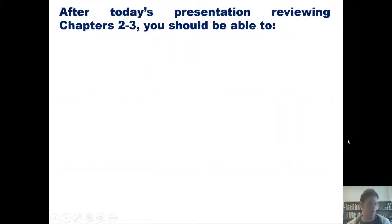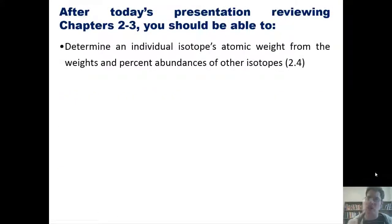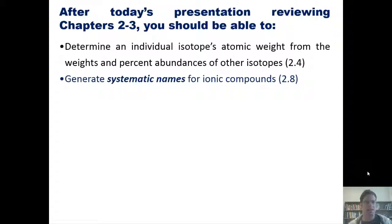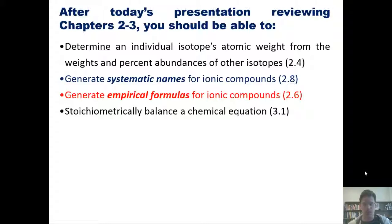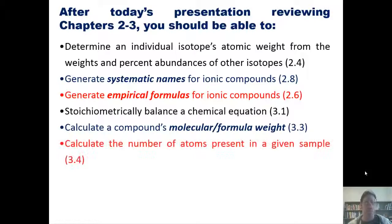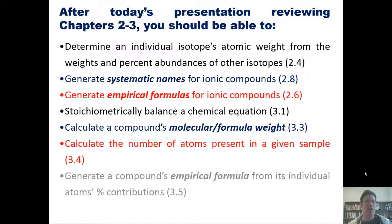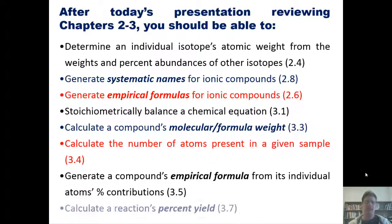More specifically, after watching this series of videos, you guys should be able to determine an individual isotope's atomic weight from the weights and percent abundances of other isotopes, generate systematic names for ionic compounds, generate empirical formulas for ionic compounds, stoichiometrically balance a chemical equation, calculate a compound's molecular or formula weight, calculate the number of atoms present in a given sample, generate a compound's empirical formula from its individual atoms' percent contributions, and calculate a reaction's percent yield.